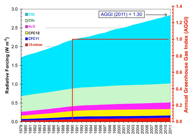The atmospheric lifetime of a species measures the time required to restore equilibrium following a sudden increase or decrease in its concentration in the atmosphere. Individual atoms or molecules may be lost or deposited to sinks such as the soil, the oceans and other waters, or vegetation and other biological systems, reducing the excess to background concentrations. The average time taken to achieve this is the mean lifetime.